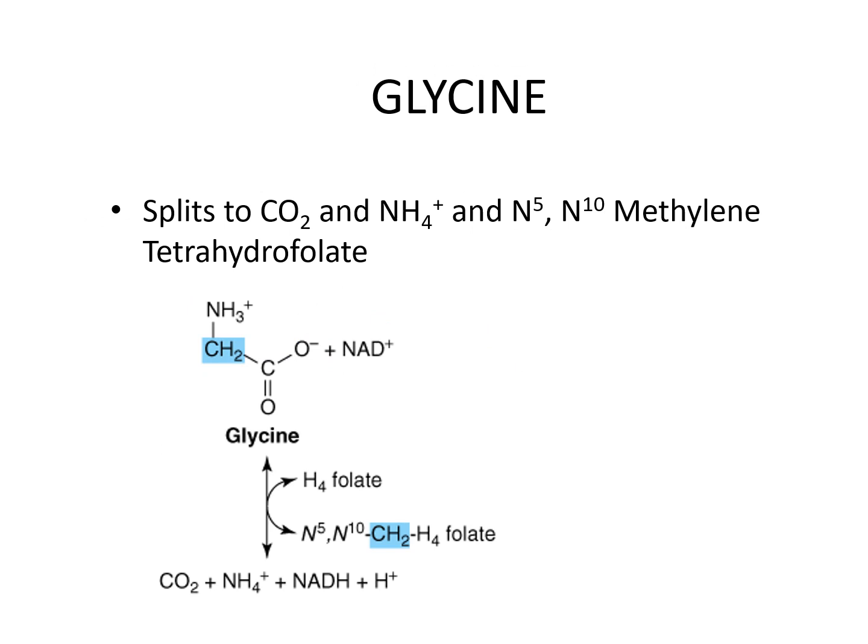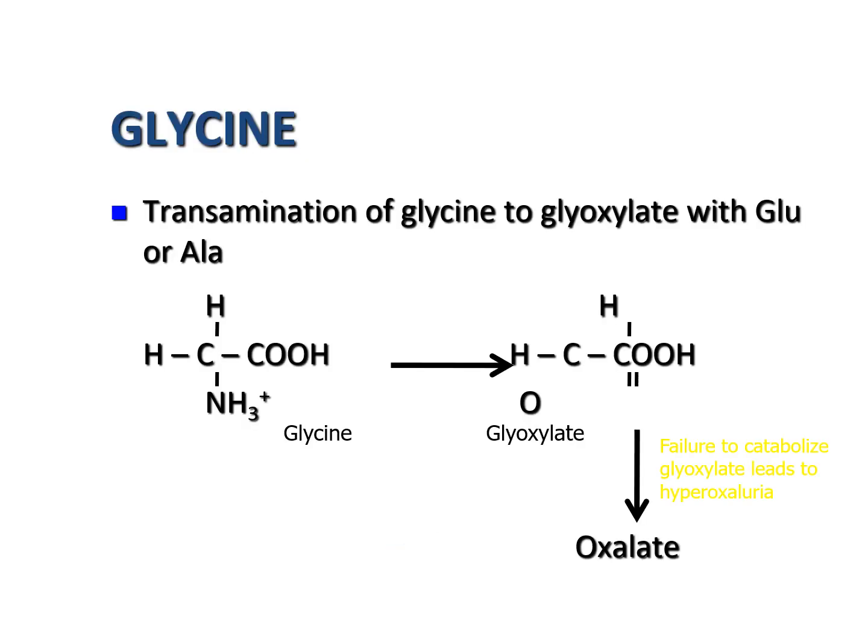Glycine splits to carbon dioxide, ammonia, and N5,N10-methylene tetrahydrofolate. There is also transamination of glycine to glyoxylate with glutamine or alanine.